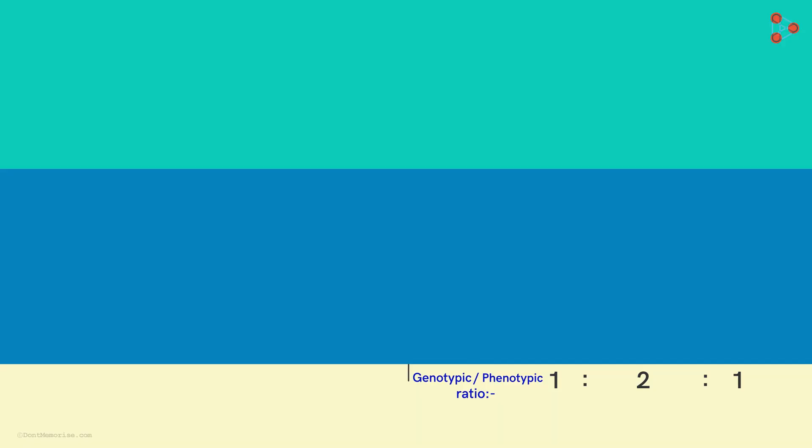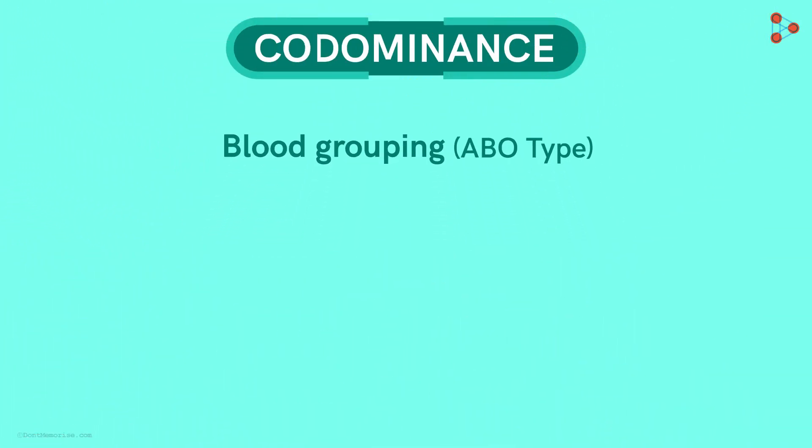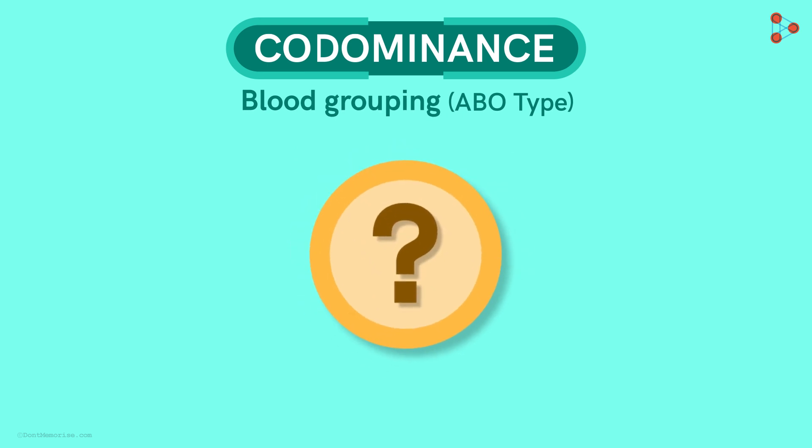Co-dominance is observed in humans as well when it comes to blood grouping. Let's understand this in detail. How many blood groups do we have by the way? Actually there are many types, but we mostly take into consideration the A, B, O type. And this type divides as how many groups? There are basically four groups according to this system. These are A, B, O and AB group.